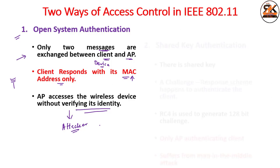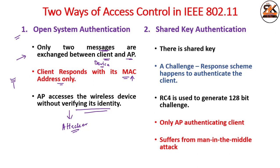Another way of authenticating a device is shared key authentication. Here we have a pre-shared key: the user sets a key and that key is also shared with the access point. A challenge-response scheme is used to authenticate the client. Authentication works on knowledge of the shared key. A random challenge — a nonce — is generated from the access point, and when the client receives the nonce, it encrypts it with the shared key and sends it back.